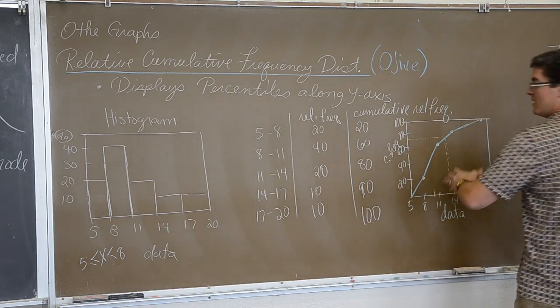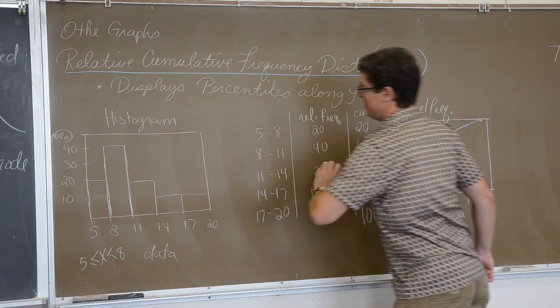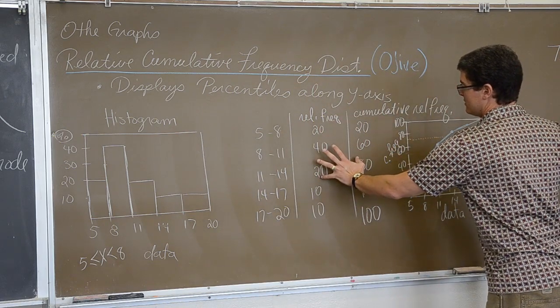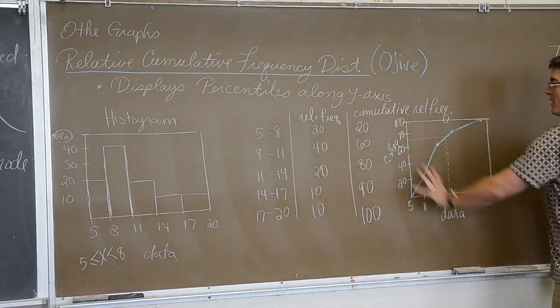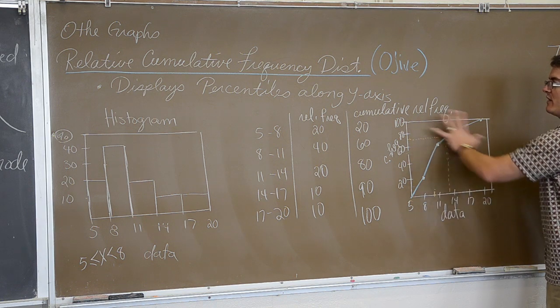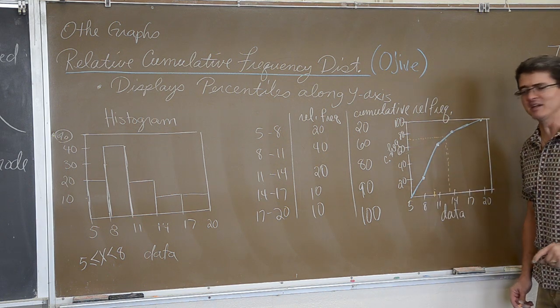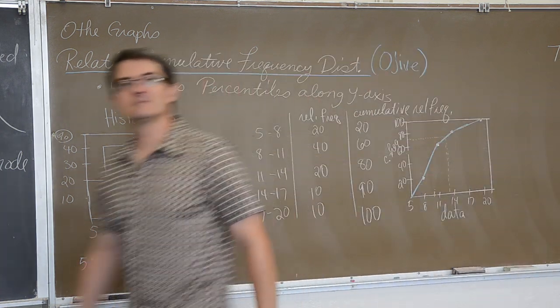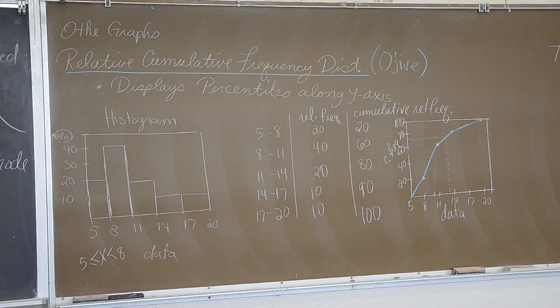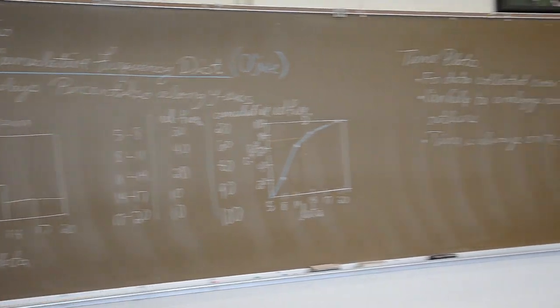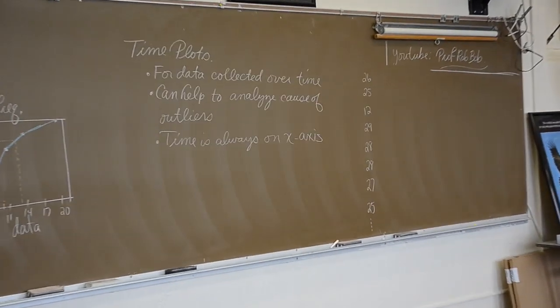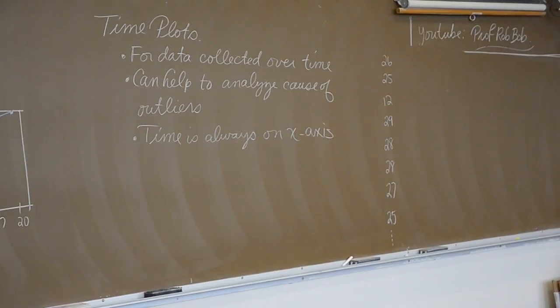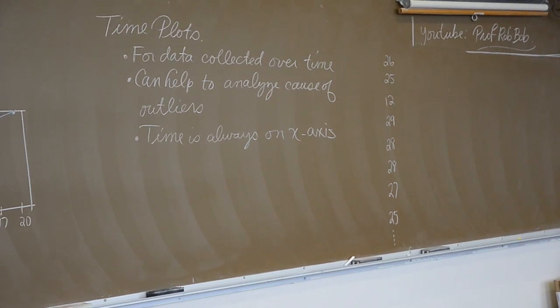Well, there we got it. We have gone from a histogram through a distribution chart to a relative cumulative frequency distribution, or an ogive graph. Sweet! Let's see what else we can look at. If we have time, and it looks like I just have a few minutes, that might be enough time to talk about time plots. Oh, that is not a stem plot. Time plots.